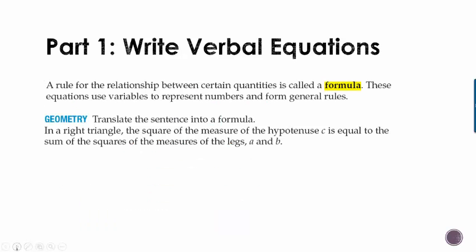Now let's try doing this with kind of a story. A rule for the relationship between certain quantities is called a formula. These equations use variables to represent numbers and form general rules. So let's translate this sentence into a formula. In a right triangle, the square of the measure of the hypotenuse C is equal to the sum of the squares of the measures of the legs, A and B. So we have a right triangle. If you remember from last year, the hypotenuse is what's across from the right angle, and our legs are A and B.